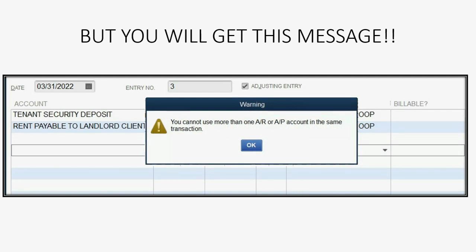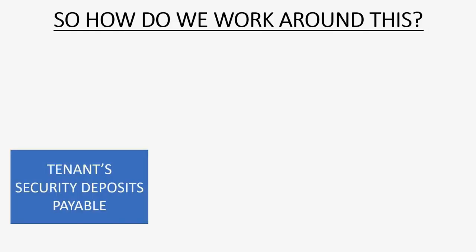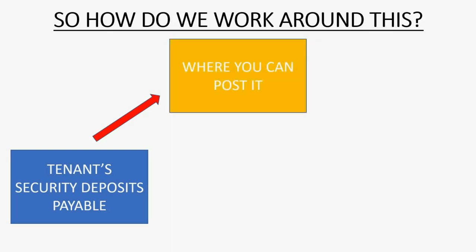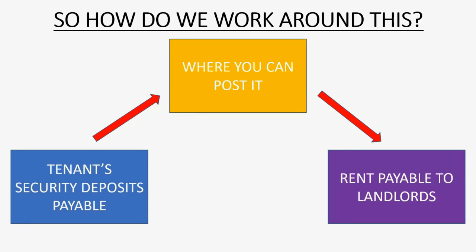If only QuickBooks would let us use more than one accounts receivable account in a transaction, we would be finished. So how do we work around this? Instead of recording it in one step, we record it in two steps. First, we have to move the tenant's security deposit to a place that QuickBooks will allow us to post it. Then, once it's there, we move the security deposit to where it belongs in the rent payable to landlord clients, just like all the other normal rent payouts.